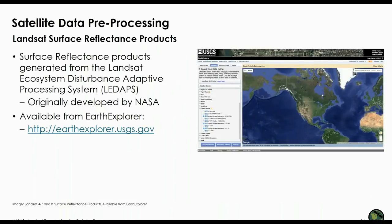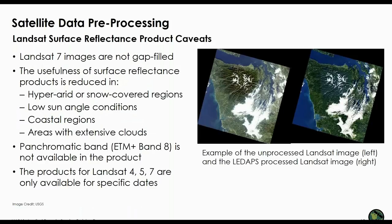You can currently acquire Landsat surface reflectance products for Landsat 4, 5, and 8. These products are generated using the Landsat Ecosystem Disturbance Adaptive Processing System, or LEDAPS, which was developed by scientists at NASA Goddard as part of the Measures Project. The USGS now maintains the system and provides these products via the Earth Explorer data portal. There are a few caveats: the Landsat 7 images are not gap-filled, and the usefulness of these products is reduced in certain areas such as very hyperarid areas, snow-covered regions, conditions with low sun angle, coastal regions, and areas with extensive clouds.